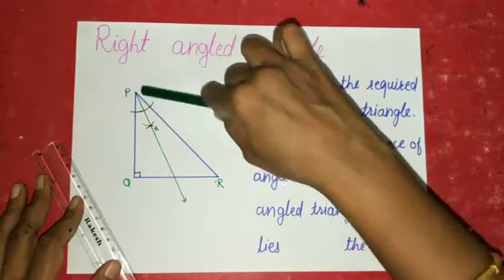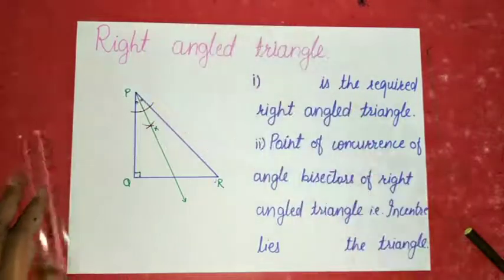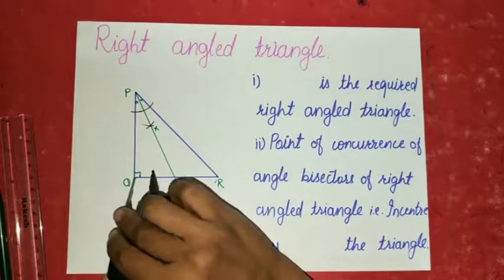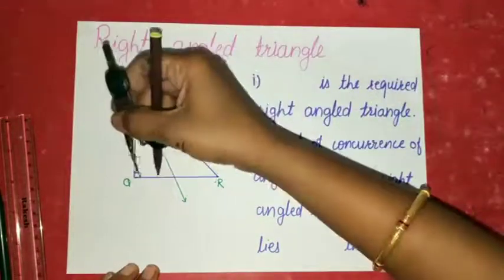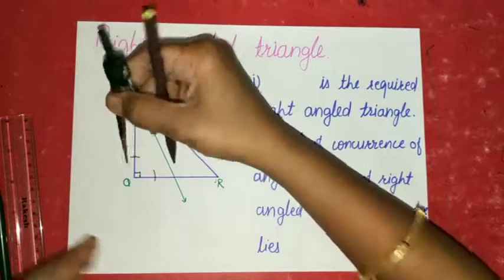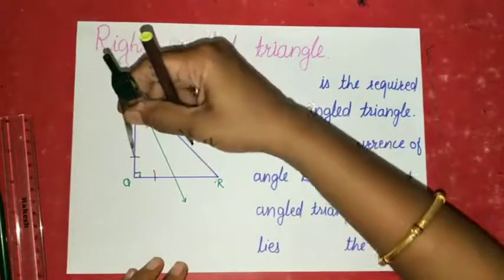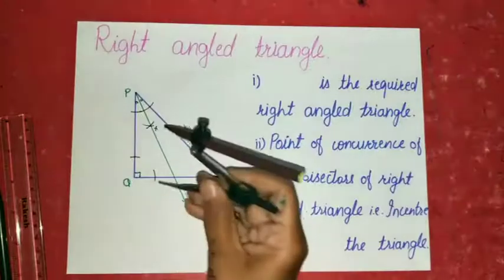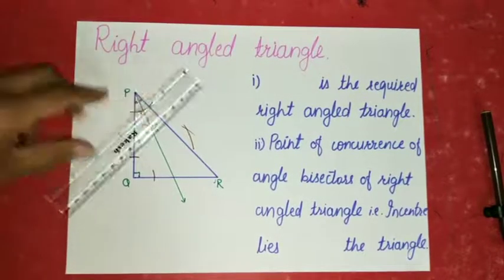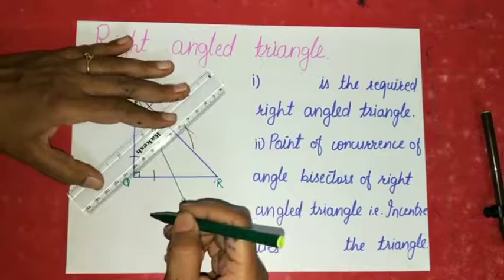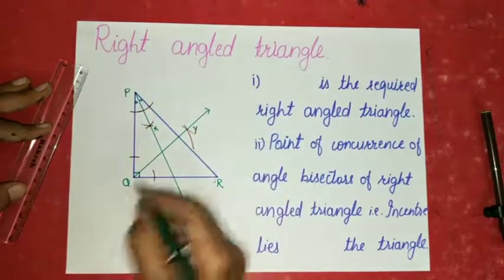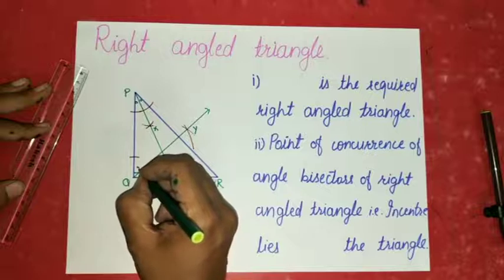Ray PX is the angle bisector of angle P, so we will show the symbol of congruency. Now we will draw the angle bisector of angle Q. Take the compass, give arcs from vertex Q on both arms of angle Q. From the two intersecting points, give arcs and join them using the ruler. Give the arrow and name it Y. Ray QY is the angle bisector of angle Q, so these two parts are congruent.